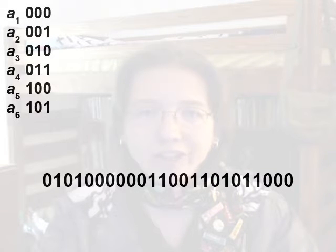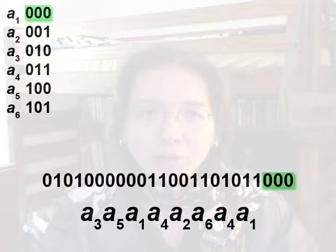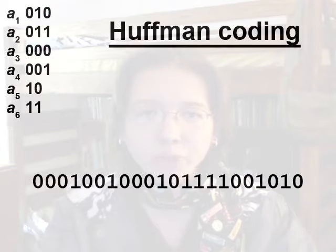When we decoded the message after it was encoded in the fixed-length code, we could read it in blocks of three and decode each block into the matching symbol. But how are we going to decode a message that's encoded with Huffman coding, where the codes aren't the same length?